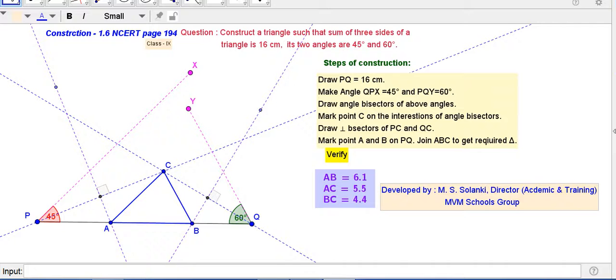A problem on construction of NCERT page number 194 of class 9th. Question: construct a triangle such that the sum of three sides of a triangle is 16 cm. Its two angles are 45 degree and 60 degree.